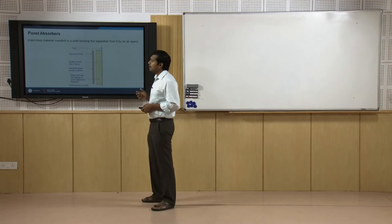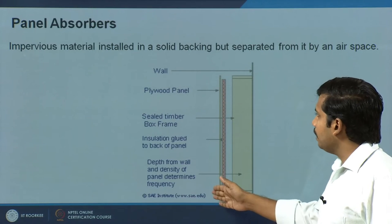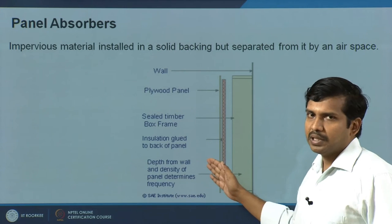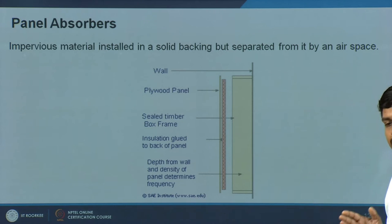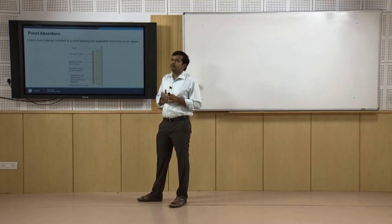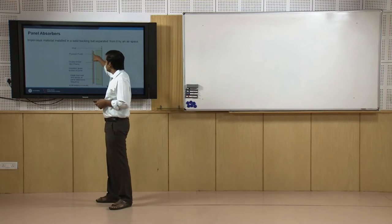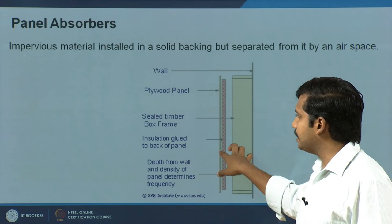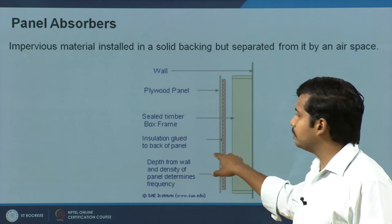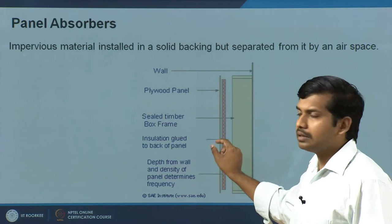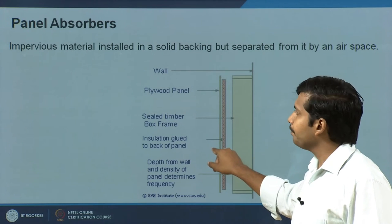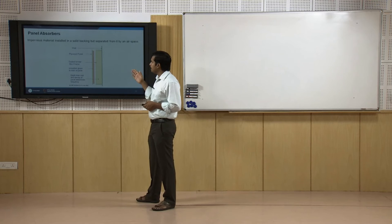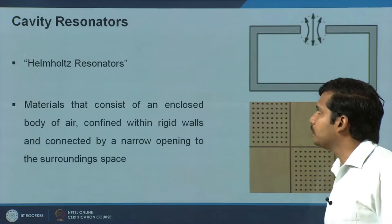The second type is the panel absorber. Imagine a thin plywood panel mounted on a frame with an air gap between the panel and the wall. This absorbs at a specific frequency bandwidth, restricted to one or two specific bandwidths depending on the thickness of the panel, the area of absorption, the air gap behind it, and the density of the panel. It typically resonates at a particular frequency, and I will show you specific examples.